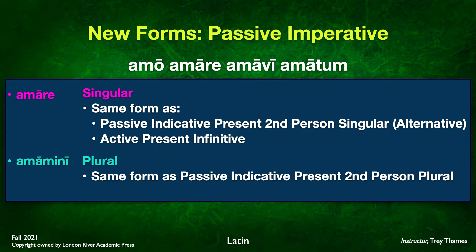It's mostly in deponent verbs that we see passive imperative forms, but we want to go ahead and show them to you. Before I show you the deponent forms, I want to show you a standard verb you are already familiar with: amo, amare, amavi, amatum. In the passive form, the singular imperative is amare. Keep in mind this is the exact same form as the passive indicative present second person singular alternative form — and also the active present infinitive, the second principal part, amare. All that to say, this form can also be the passive imperative singular.